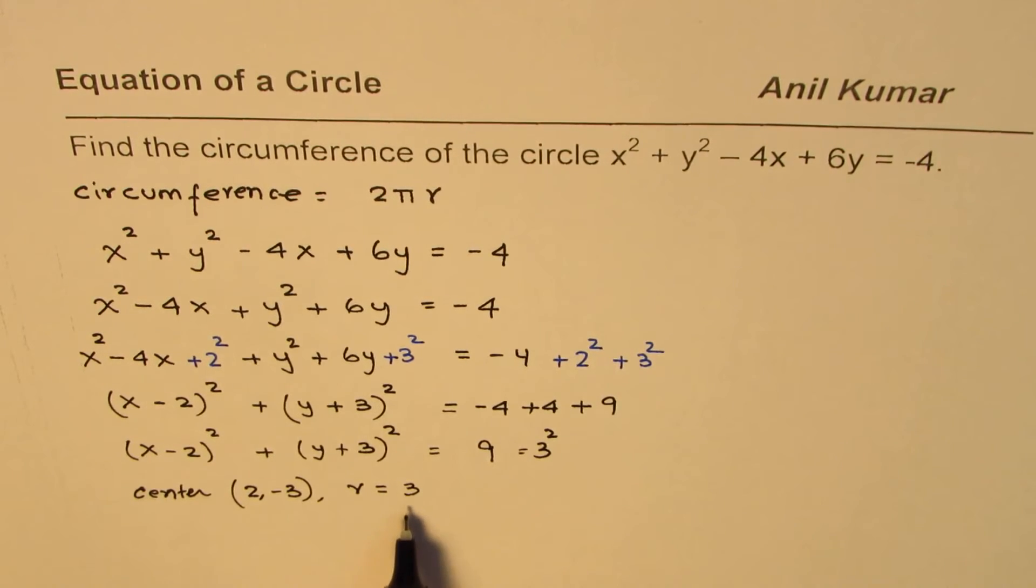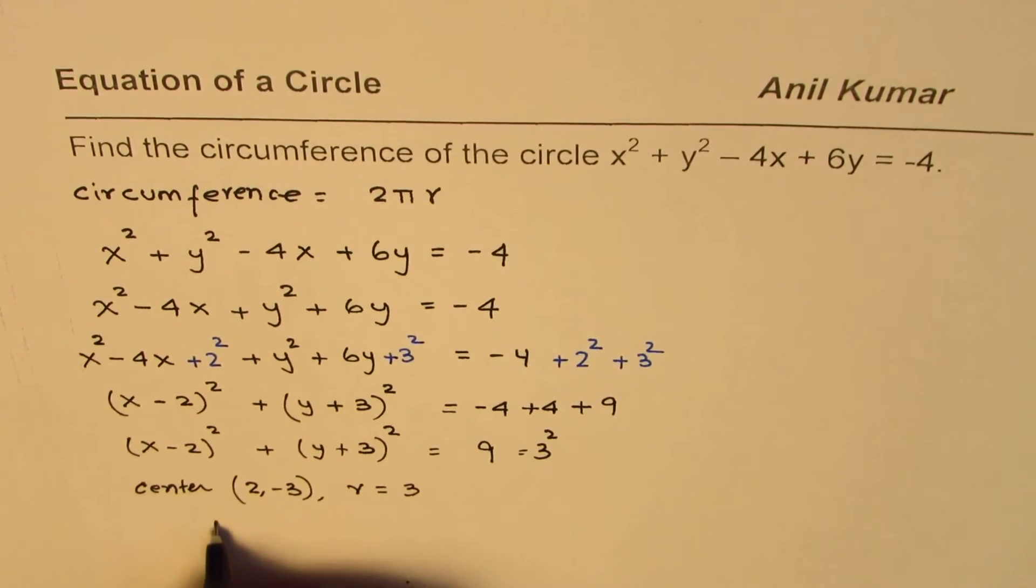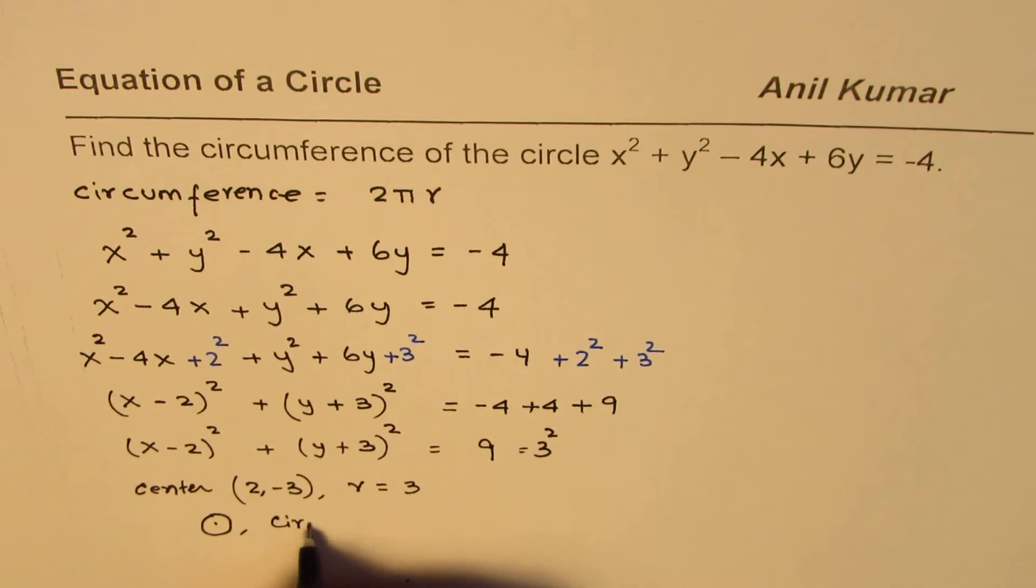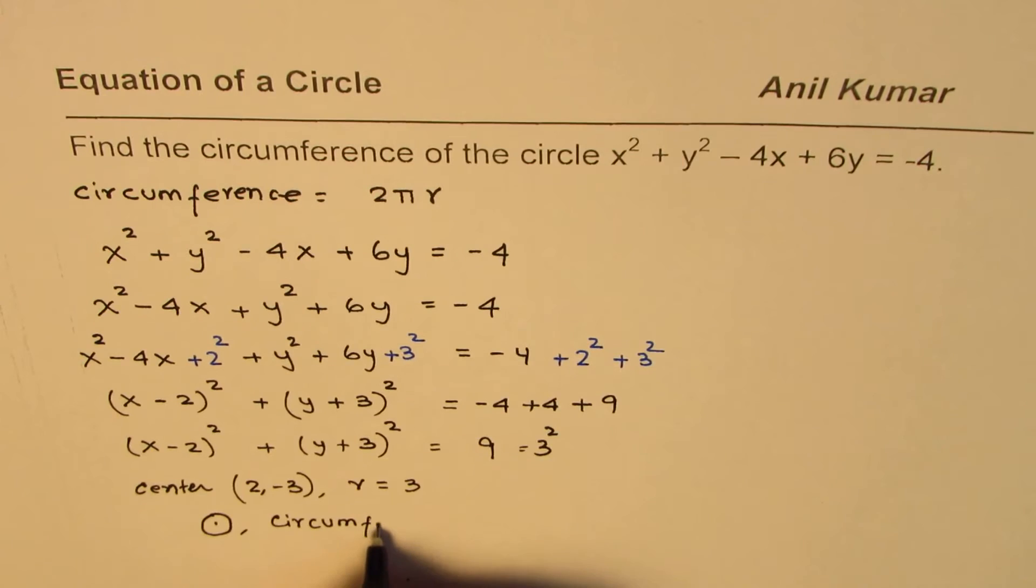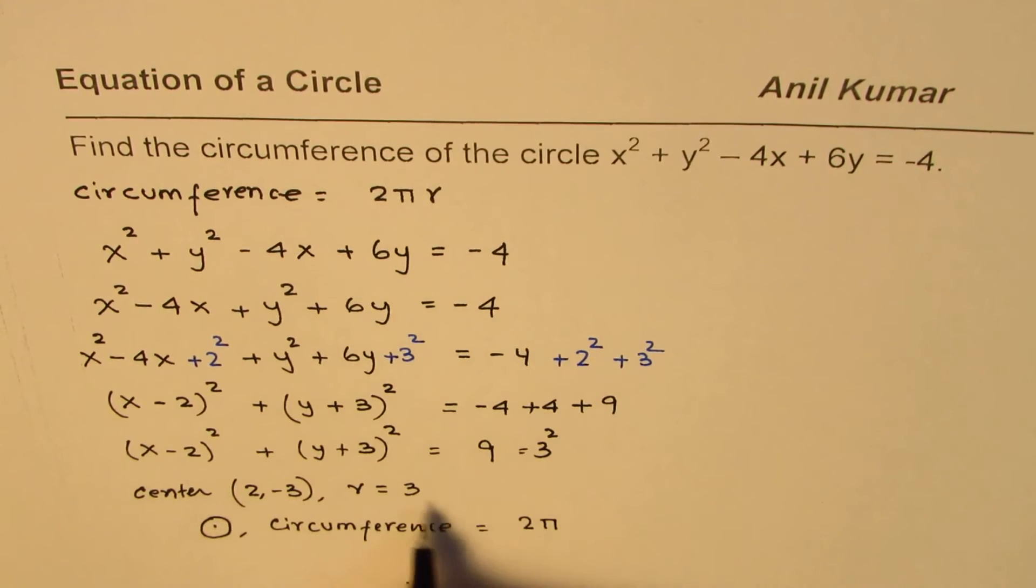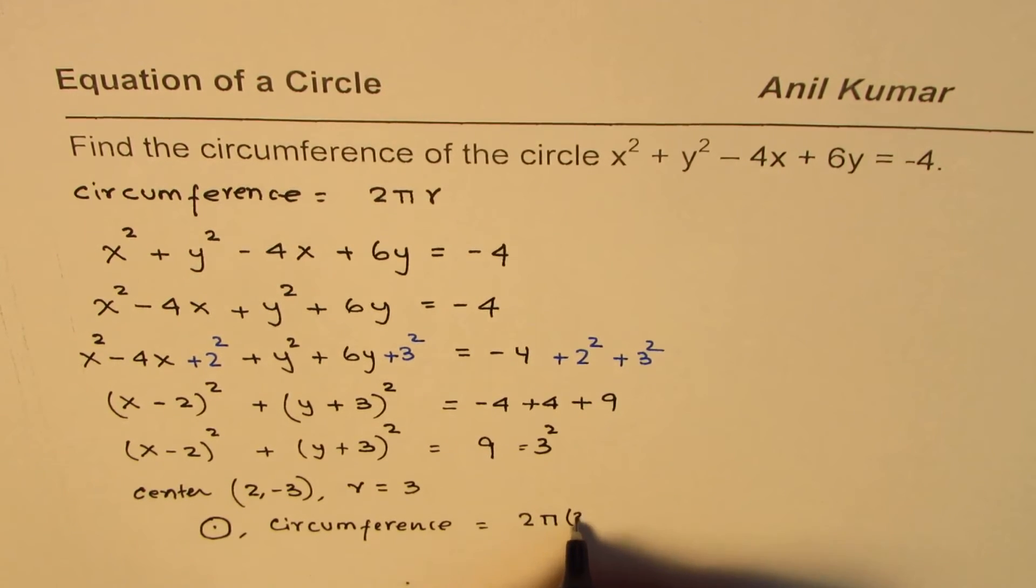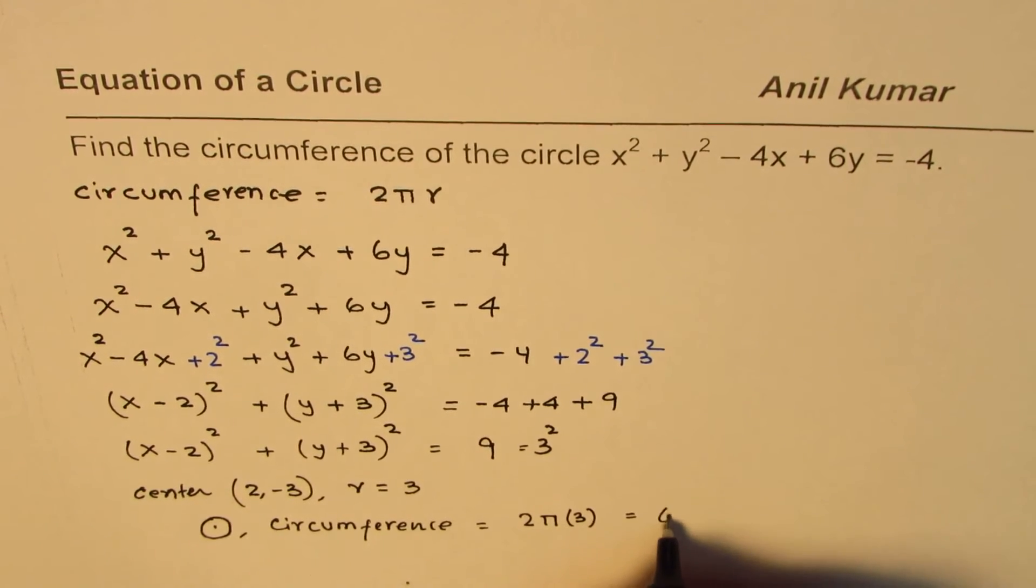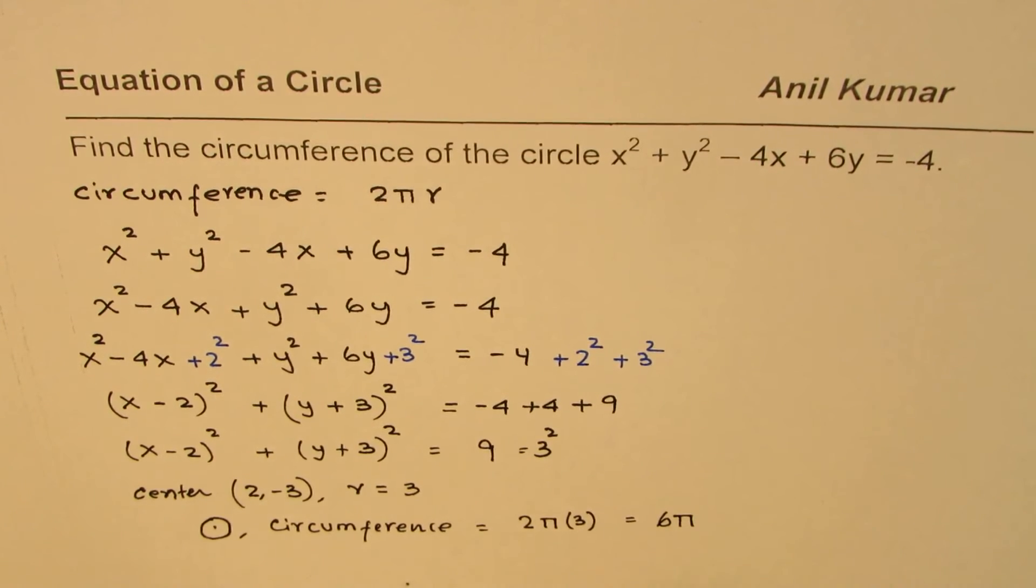Now since we know the radius we can find the circumference. Circumference is equal to 2 pi and the value of r we just found as 3. So I'll just multiply this by 3. So that is 6 pi.